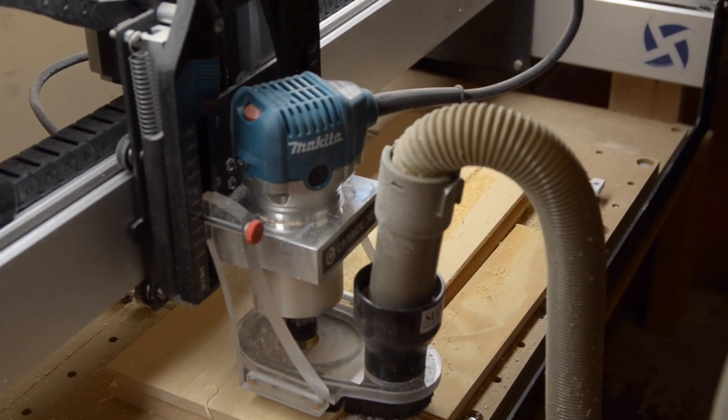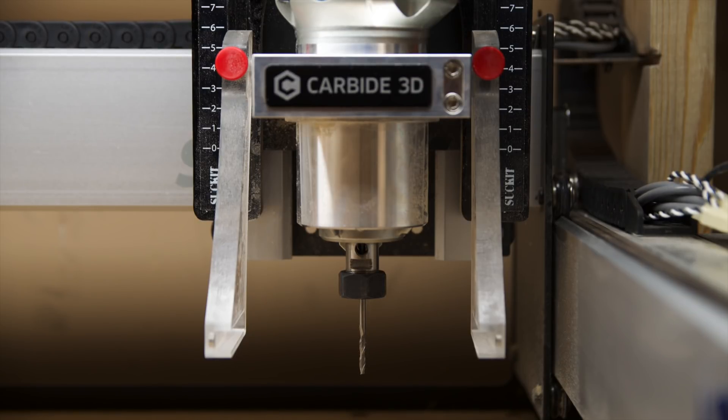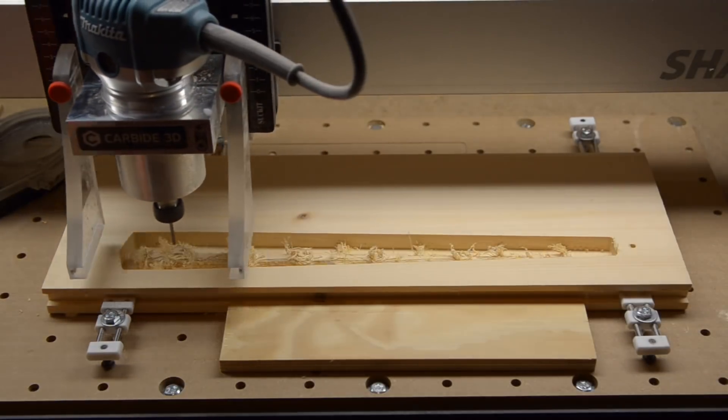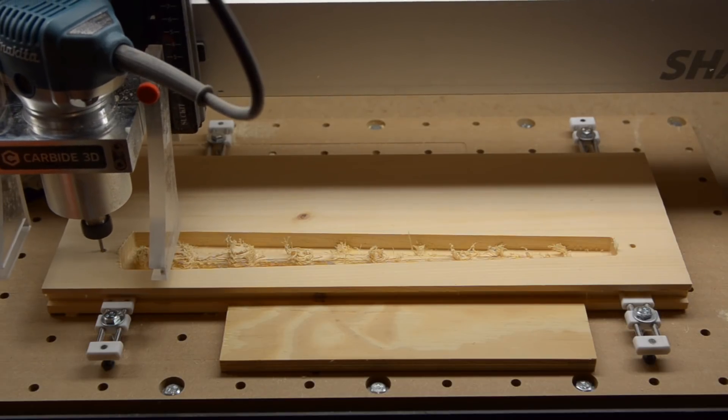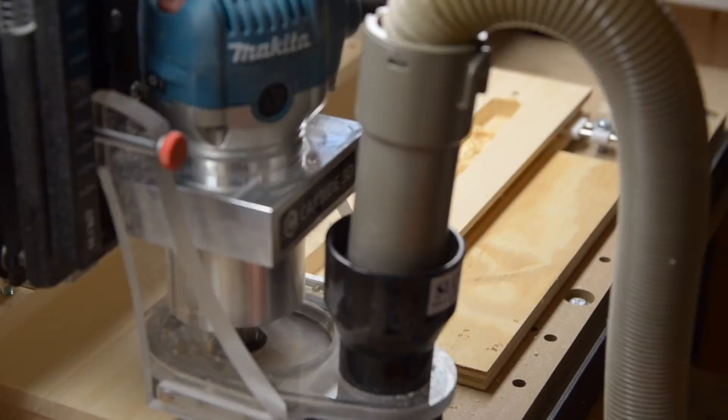After that, I switched out my quarter inch Makita collet for an eighth inch Elaire collet and loaded up an eighth inch square end mill to bore out the holes for my indexing pins. And finally, I installed my ball end mill for finishing. At this point, the wand was really starting to take shape.